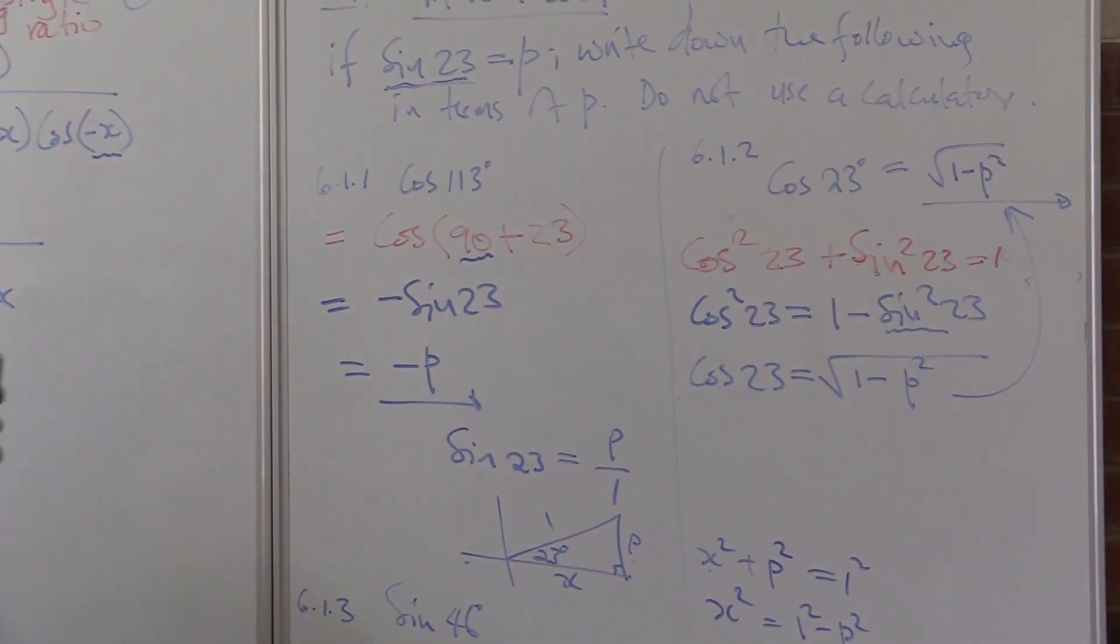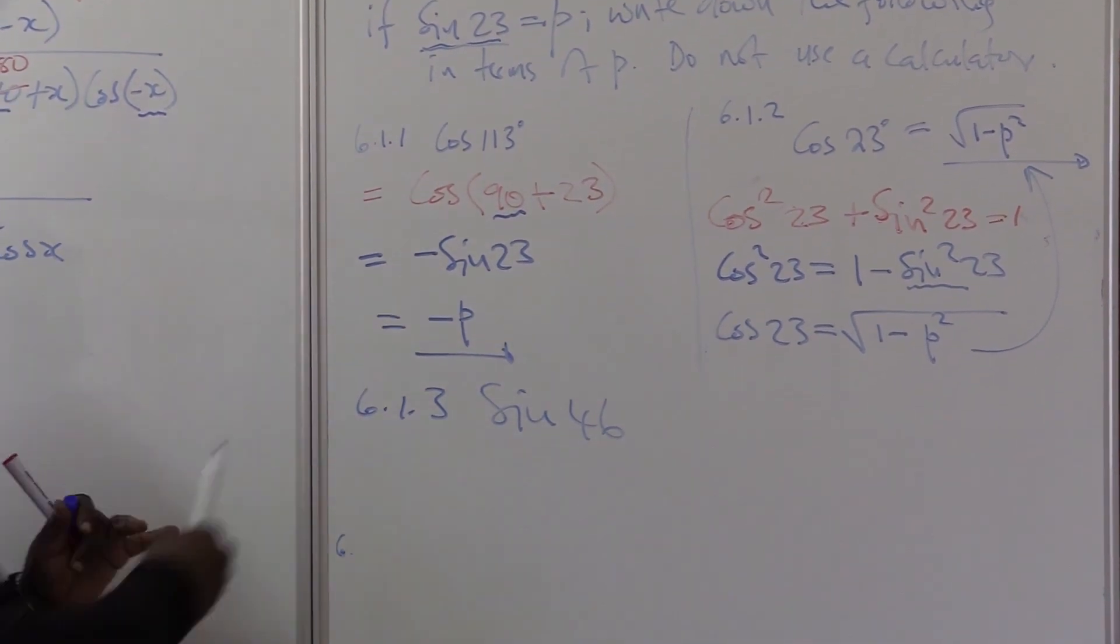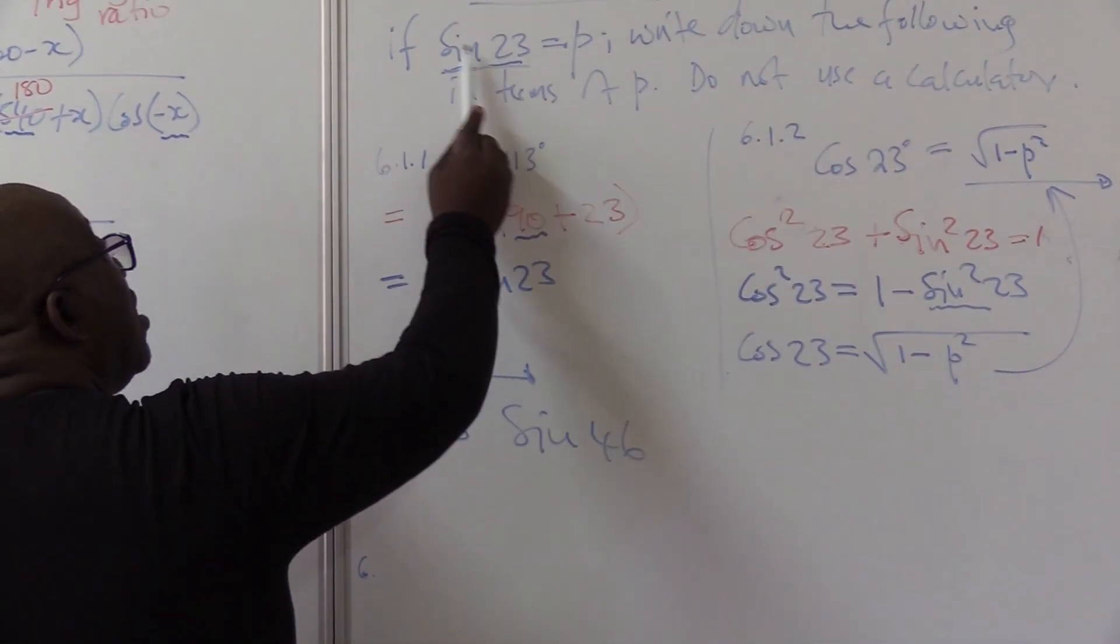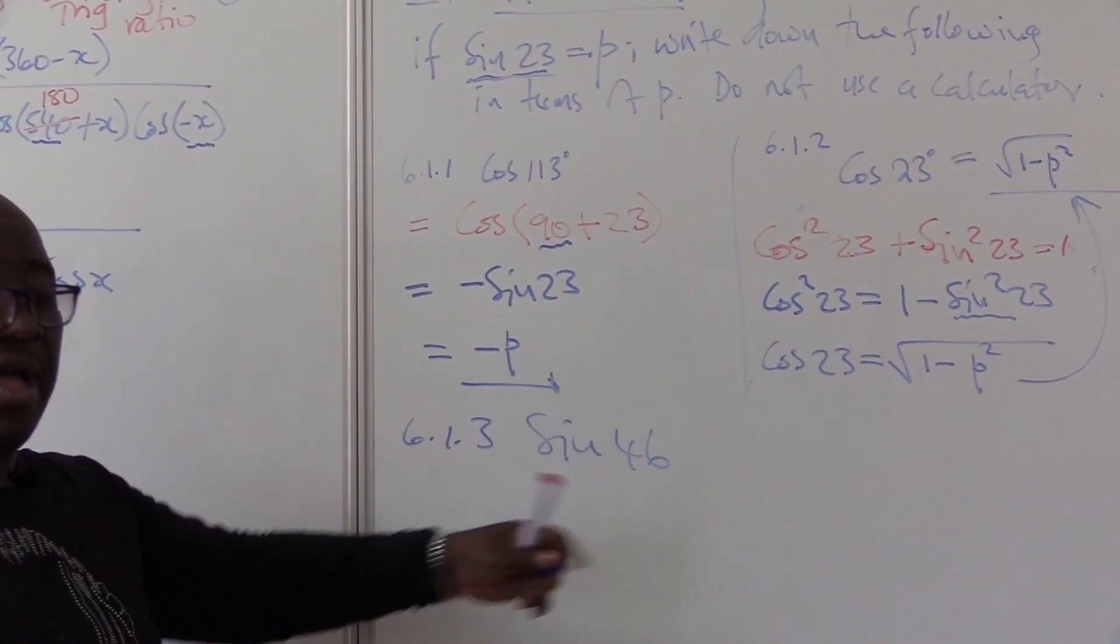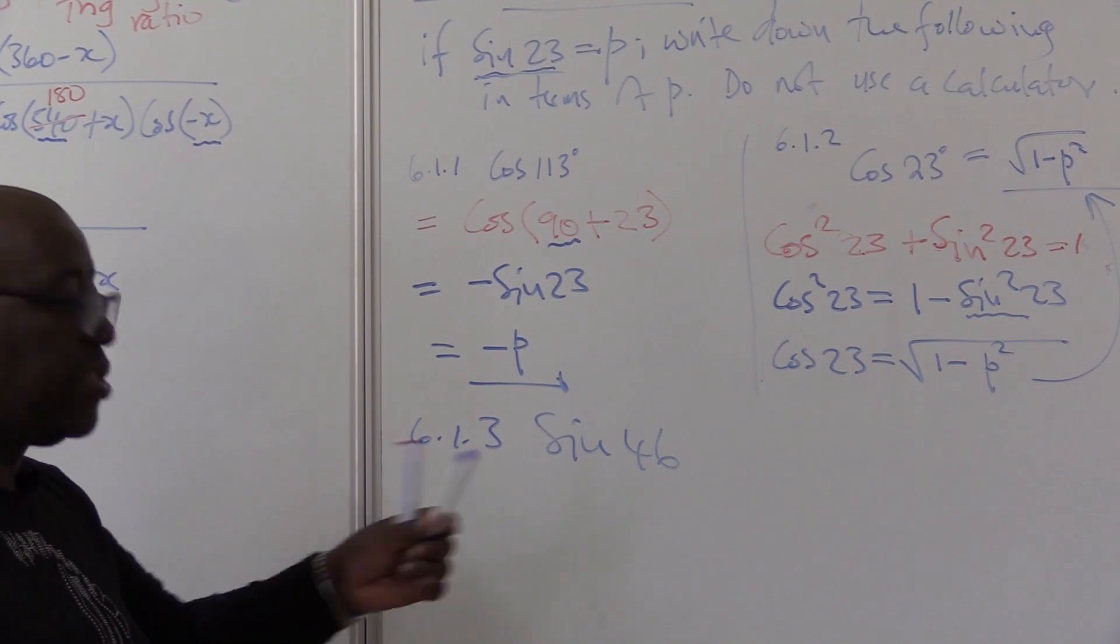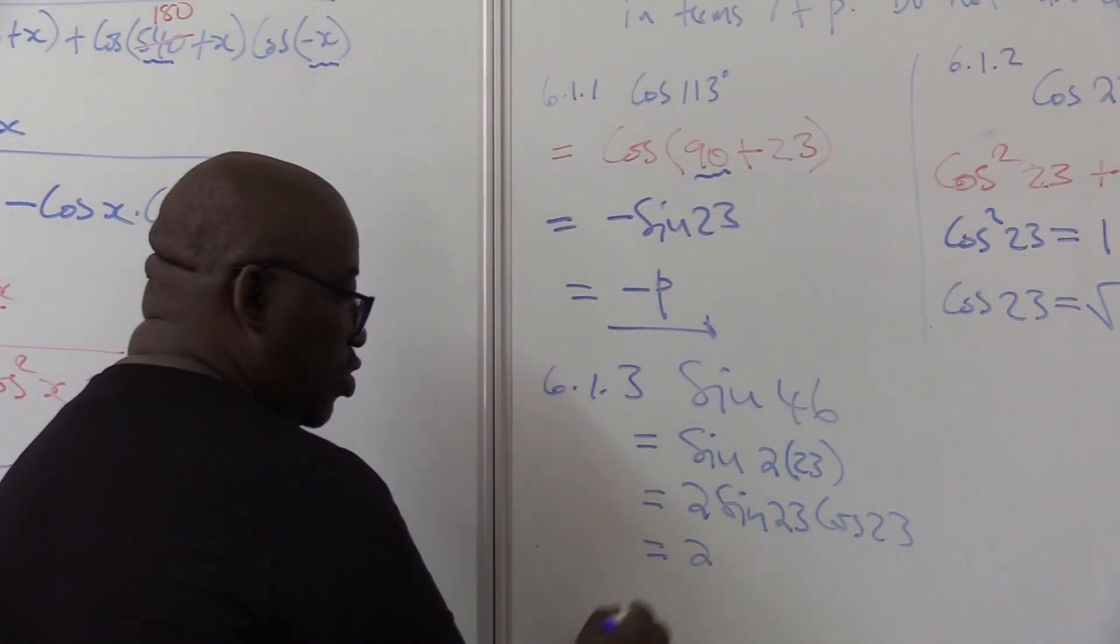I want us to look at the third one. Remember what we're doing here: we're trying to get sine 23 and remove it and substitute it with P. When I see 46, I can see two 23s there. This then will be 2 times sine 23.